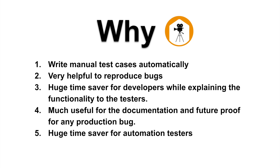That miscommunication will be completely reduced — no more blame game about who told whom what. It's also very useful for documentation and future-proofing. In production, if a bug comes up tomorrow and you don't have documentation, the manager asks 'Have you tested this?' and you can't show proof. This tool helps there. It also saves a huge amount of time for automation testers by automatically generating XPath and CSS selectors for every element you interact with.